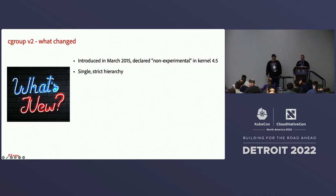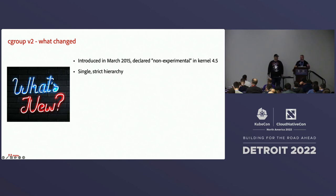So cgroupv2 — what changed? Cgroupv2 was introduced to the kernel as a non-experimental feature in kernel 4.5, back in March of 2015. It's been stable for about seven years now. The single biggest feature introduced was a single, strict hierarchy. Cgroups v1, when first written, was a feature built with maximum flexibility — basically the kernel developers wanted to give folks writing software as many ways as possible to manage resources around their processes, and in the process they created a system that was really hard to manage.